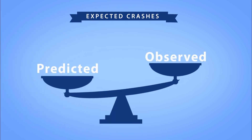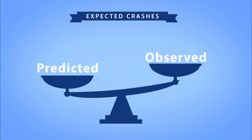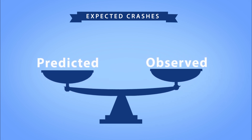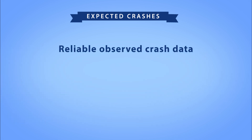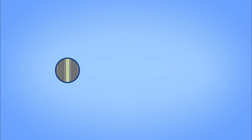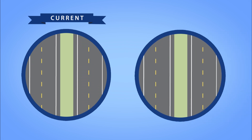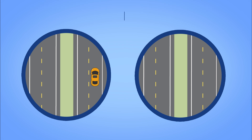Expected crashes are based on a weighted average of the predicted crashes and the observed crash history. It is appropriate to use expected crashes to estimate the long-term safety performance of a site when reliable observed crash data is available, and if the site characteristics remain generally unchanged from the existing conditions to the scenario of interest, then there is likely value in incorporating the site-specific crash history. For example, if you are estimating the safety performance of an existing roadway under current or future traffic volumes and the number of lanes and median type remain the same, then it is appropriate to estimate the expected crashes.